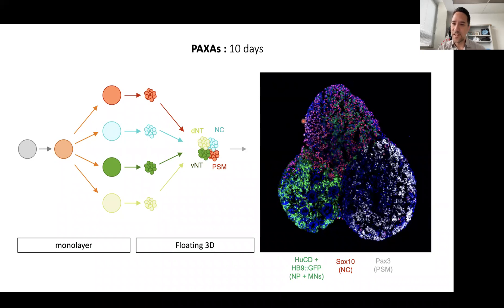This compartment also has a lot of SOX10 positive neural crest cells. Then in this compartment in the bottom right, we see the expression of a pre-somitic mesoderm marker PAX3.